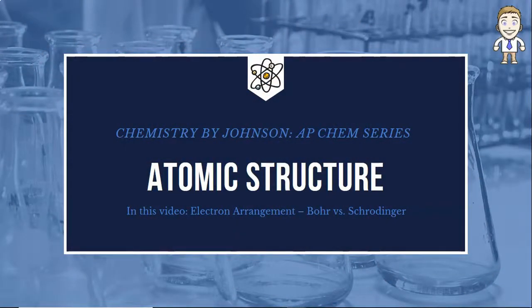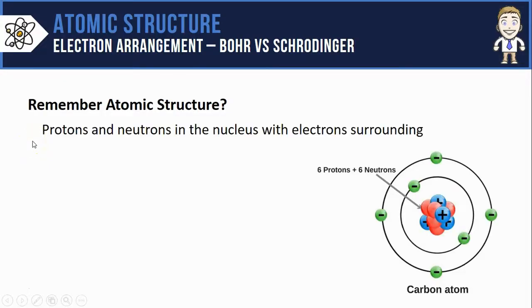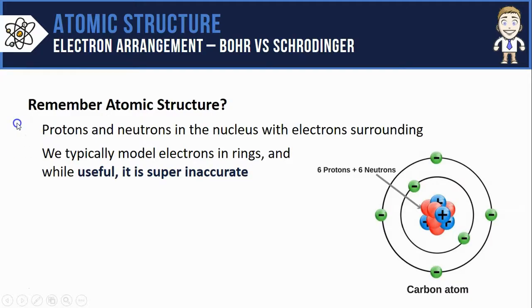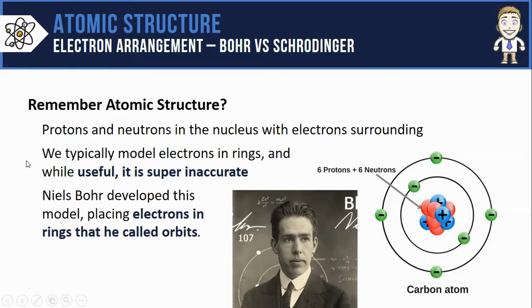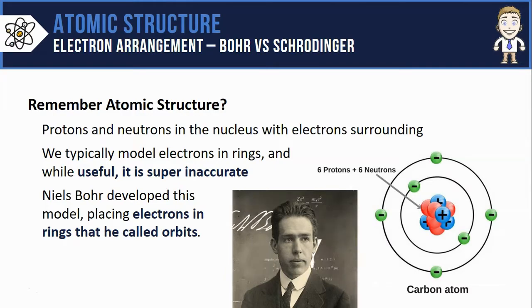Hey everyone, in this AP Chem series video we're going to see what Niels Bohr and Erwin Schrödinger had to say about electron arrangement. Remember that when it comes to atoms we've got protons and neutrons in the nucleus with the electrons surrounding. Typically we model this with electrons placed in rings, and while that's a useful way to do it, it's actually inaccurate. We do it that way because of Niels Bohr, who developed this model and placed electrons in very distinct rings called orbits, modeled after the way planets orbit the sun.